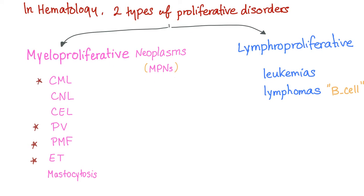Myeloproliferative neoplasms, or MPNs, include CML — chronic myeloid leukemia, CNL — chronic neutrophilic leukemia, CEL — chronic eosinophilic leukemia, PV — polycythemia vera, PMF — primary myelofibrosis, which is essentially bone marrow fibrosis, ET — essential thrombocytosis, and mastocytosis. We're going to talk about CML, PV, PMF, and ET.